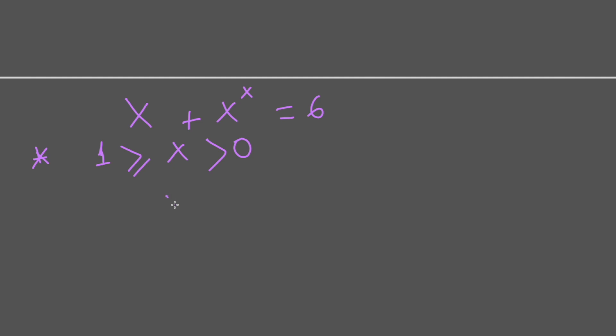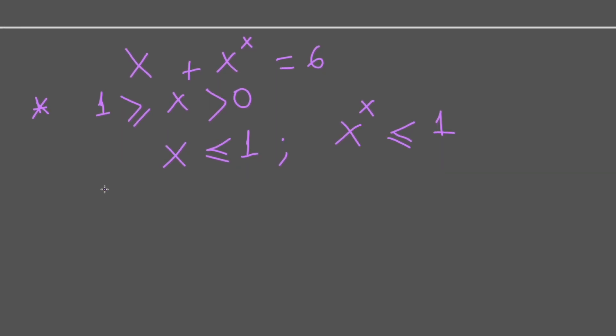In this case x is smaller or equal to 1, and x power of x is always smaller or equal to 1 as well. So the equality in this case cannot happen because the left side is smaller or equal to 1 plus 1 equal to 2. This is clearly smaller than 6.